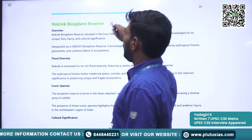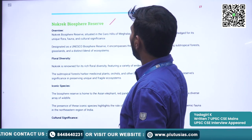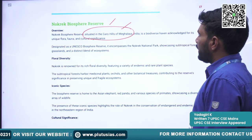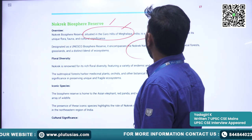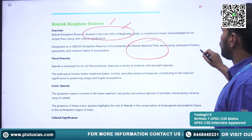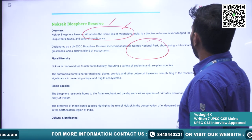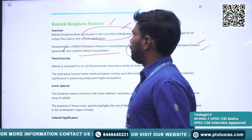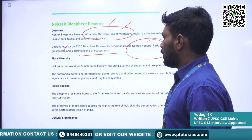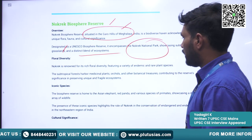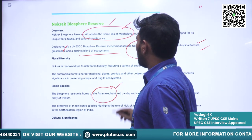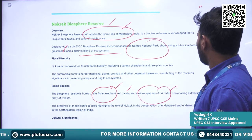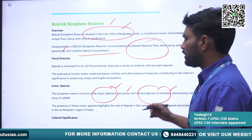Next is Nokrek Biosphere Reserve. It is basically situated in the Garo Hills of Meghalaya. It encompasses Nokrek National Park, showcasing subtropical forests, grasslands, and a distinct blend of ecosystems. The iconic species here are the Asiatic Elephant, Red Panda, and various species of primates, showcasing its diverse wildlife.